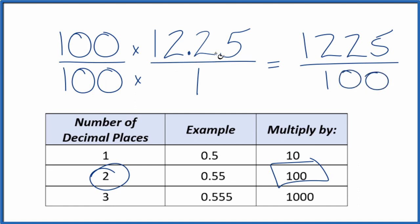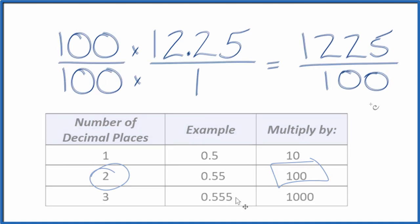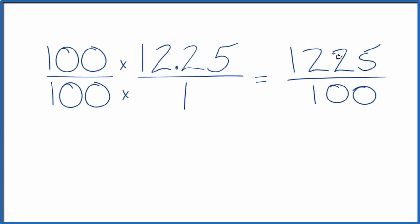12.25, the decimal, equals the fraction 1,225 over 100. And we can simplify this. That's because 25 would go into 1,225 and 100.